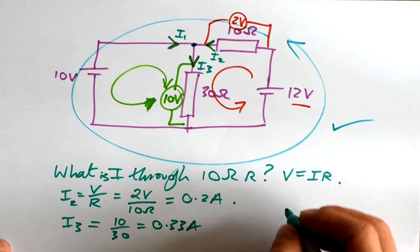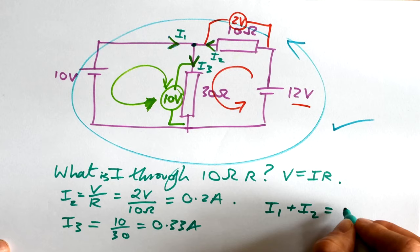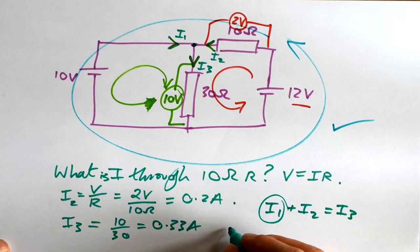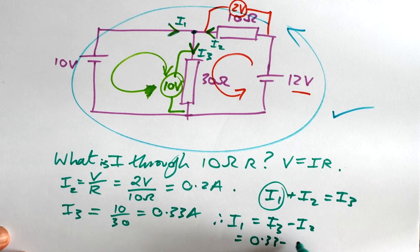Now we know that at this junction here, Kirchhoff's first law has to be satisfied. So we can see that I1 and I2 are going in, and that has to be equal to I3 coming out. So therefore, if we want to find this current here, the I1, we can say that's going to be I3 take away I2. In other words, 0.33 take away 0.2. That gives us 0.13 amps.